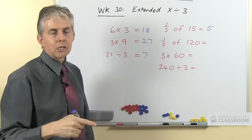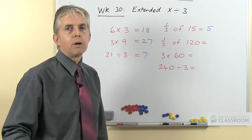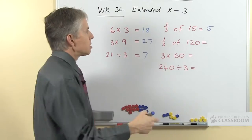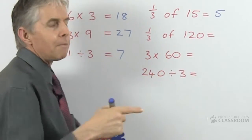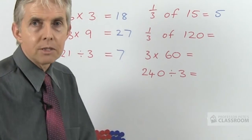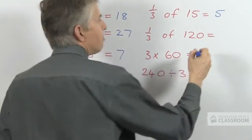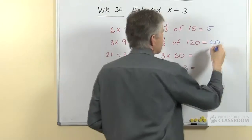Then we have an extended multiplication by a fraction: 1/3 of 120. That's 120 divided by 3, which is 12 tens divided by 3. 12 divided by 3 is 4, so the answer is easy.